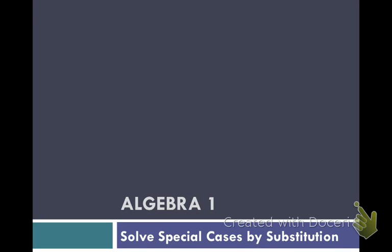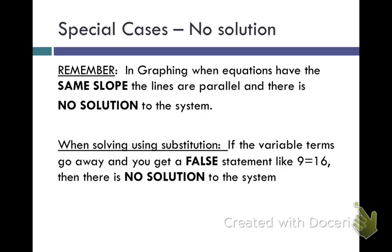Now if you remember, we looked at a couple of special cases when we were graphing systems of equations. I would like to look at those same cases when we are solving using substitution. When you graph equations and when you solve them in slope intercept form and they end up having the same slope, you know that the lines are parallel.